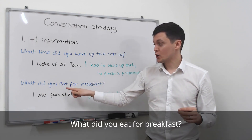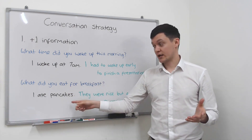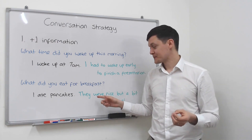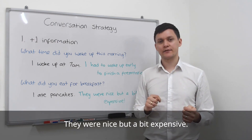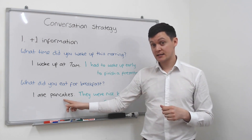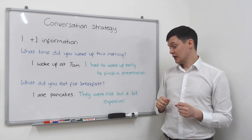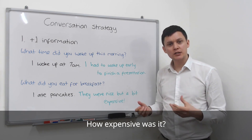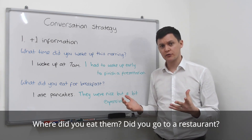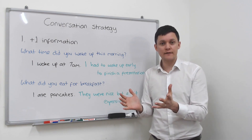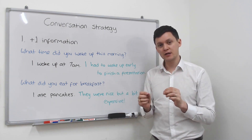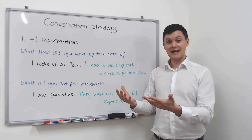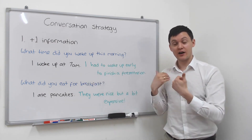The next question is a very common one: What did you eat for breakfast? We can answer: I ate pancakes — and finish there. But we're not going to do that; we're going to be interesting. We add: They were nice but a bit expensive. So extra information about the pancakes. Now the conversation partner can ask: Oh, why were they nice? What was the taste? How expensive was it? How much did it cost? Where did you eat them? Did you go to a restaurant? So he or she can use that information and make a question about it. That's our first strategy today — plus one information. It makes you more interesting and it allows the conversation partner to ask us more questions.